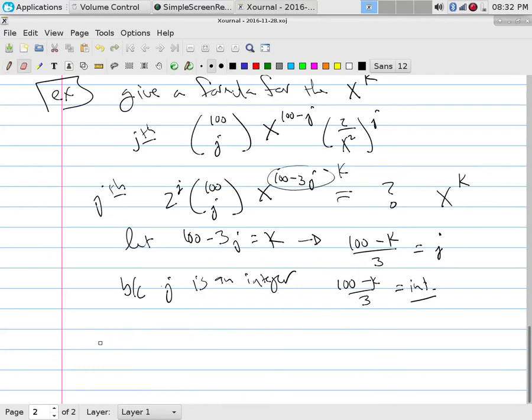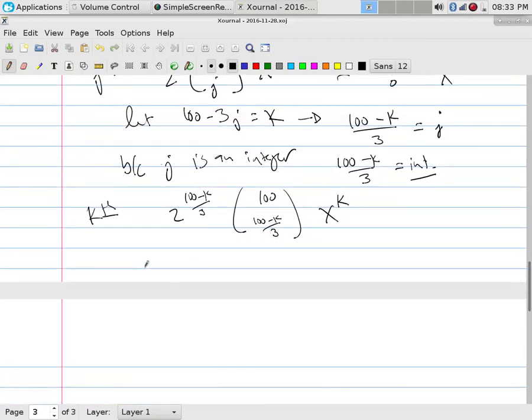And so the kth looks like 2 to the j, which is actually 100 minus k over 3, and then 100 choose j, which is 100 minus k over 3, and then I would have x to the k. And this happens if 3 divides 100 minus k. On the other hand,